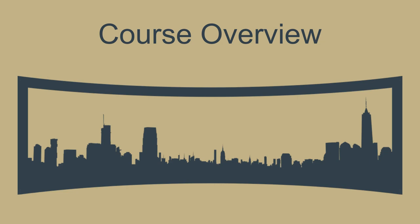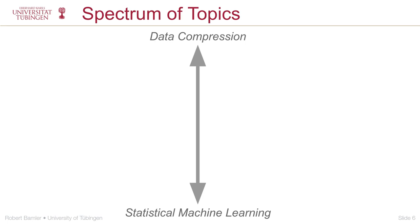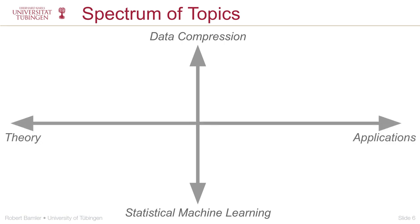So I hope I've convinced you that machine learning based data compression is an exciting and impactful field of research. This course sets itself a very specific goal of using machine learning for data compression, and we'll cover the necessary knowledge on the entire spectrum from data compression to statistical machine learning, and from fundamental theory to practical applications. You'll learn about both compression mechanisms as well as deep learning methods that allow you to model very complex data sources, and importantly, you'll learn how the two interact with each other — for example, why certain compression mechanisms are compatible or incompatible with certain types of machine learning models.